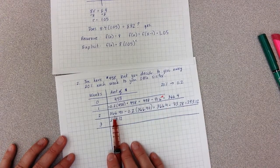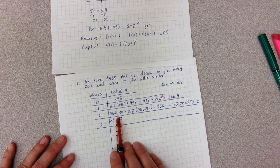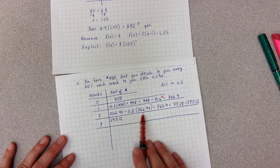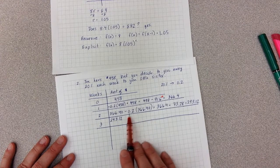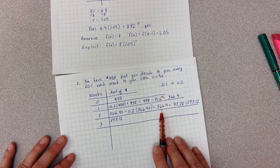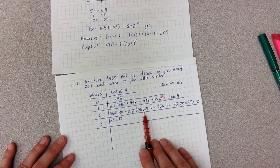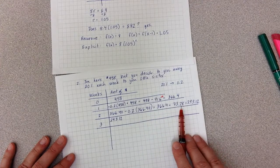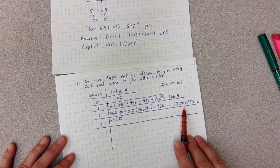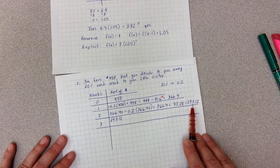I'm going to use that same process here. I start on week two with $366.40, and I'm going to hand my sister 20% of that, so that's that minus 0.2 times 366.4. So I simplify the 0.2 times 366.40, and I give my sister $73.28, leaving me with $293.12.